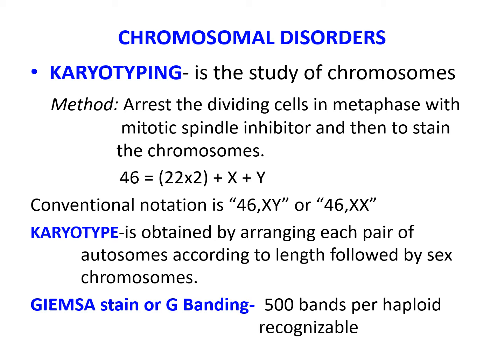In a metaphase spread, the individual chromosomes take the form of two chromatids connected at the centromere. A karyotype is obtained by arranging each pair of autosomes according to length, followed by sex chromosomes. A variety of staining methods have been developed that allow identification of individual chromosomes on the basis of distinctive and reliable patterns of alternating light and dark bands. The one most commonly used involves a GMS stain, and hence is also called G-banding. With standard G-banding, approximately 400 to 800 bands per haploid set can be detected, with an average of about 500 bands per haploid.